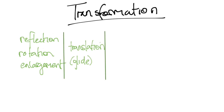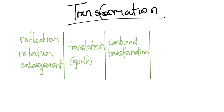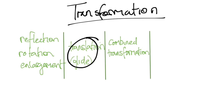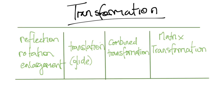Then there's translation, which we normally represent using a vector — some people call it a glide. These two can come early in your paper. Then you have combined transformation, which is normally when they join up translation and reflection — they'll call it a glide reflection. And finally we have matrix transformations.